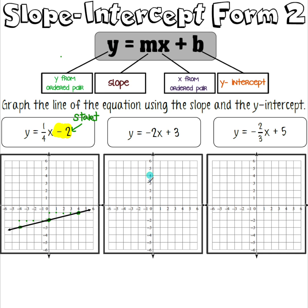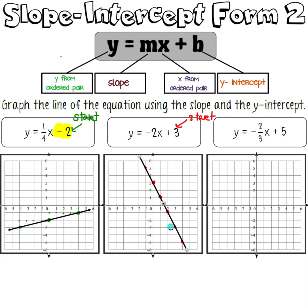If we have y equals negative two x plus three, we start at our y-intercept. In this case, three is positive so we start at positive three. Our slope is negative, so we go down two and over one and make a point, then down two over one again. You can continue this until you run out of room, or reverse and go up two over one the other way. Draw your line with arrows and there we have it.